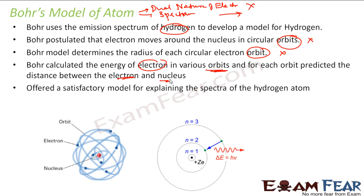He also predicted a distance between electrons and nucleus, and he offered a satisfactory explanation of the spectra of hydrogen. What he told was each orbit has specific energy — let us suppose this orbit has energy E1, this orbit has E2 and this has E3. That energy is fixed. So when an electron jumps from one orbit to another, it emits light, it emits a spectrum. And he talked about the quantization of spectrum.